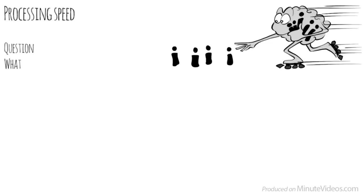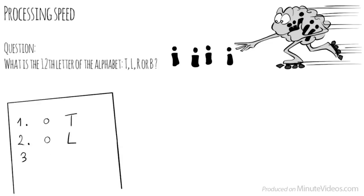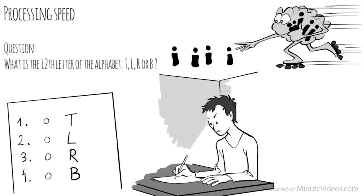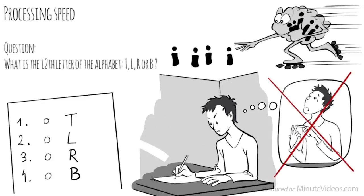The fourth section was about processing speed, the pace at which we take in new information and make sense of it in order to prepare a response. One of the questions asked was, What is the twelfth letter of the alphabet? Is it T, L, R, or B? I realized I had to rule out all the options that didn't look right. Counting would have taken way too long. L is the right answer.